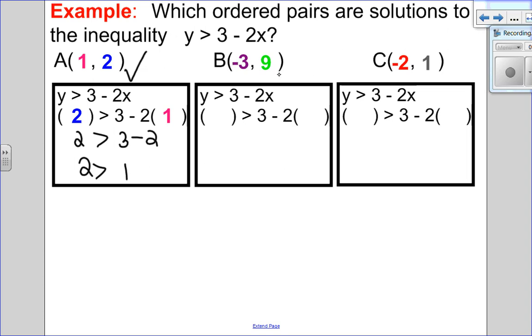Let's try another one, this point x, y. Substitute y, substitute x. Always use brackets for your substitution. Negative 2 times negative 3 is positive 6. I get 9 greater than 3 plus 6 is 9. Well, 9 is equal to 9, but it's not greater than. So that's not a solution.